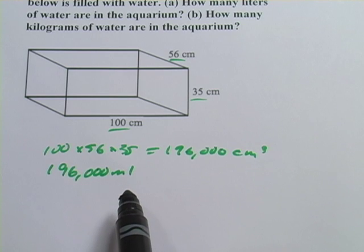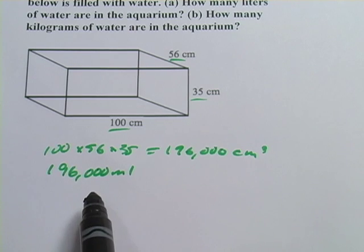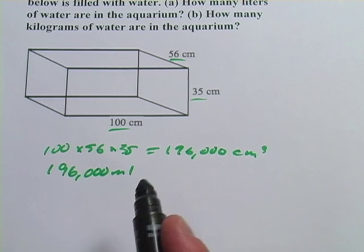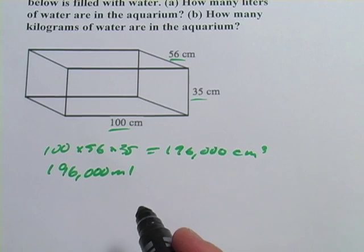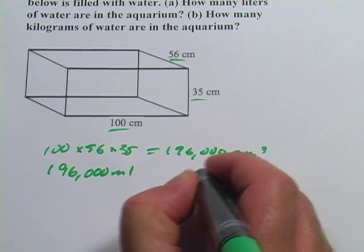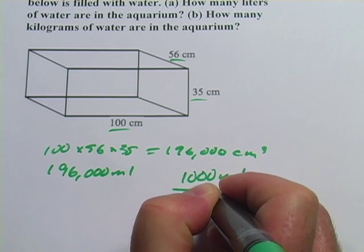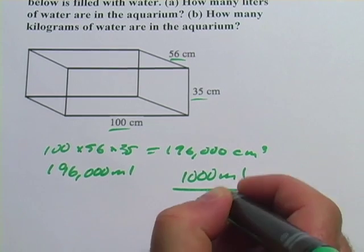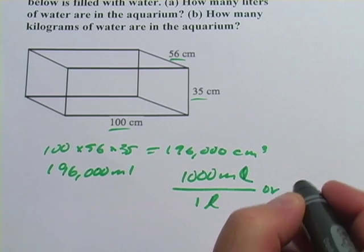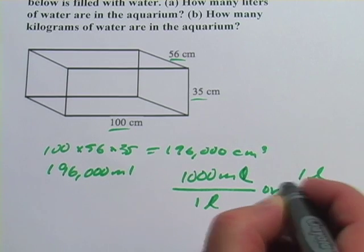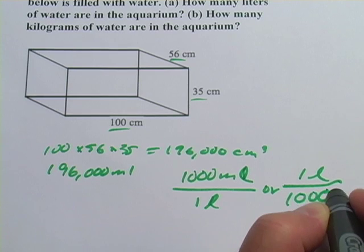Now we need to convert this to liters. And to convert this to liters, I need to know how many milliliters are in a liter or how many liters are in a milliliter. Well it's 1,000 milliliters per one liter. Or I could write 1 liter per 1,000 milliliters.